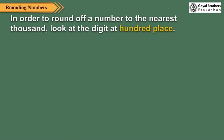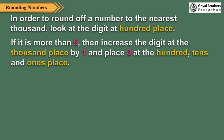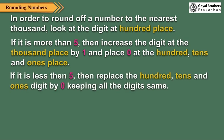In order to round off a number to the nearest thousand, look at the digit at the hundreds place. If it is more than five, then increase the digit at the thousands place by one and place zero at the hundreds, tens and ones place. If it is less than five, then replace the hundreds, tens and ones digit by zero, keeping all the other digits the same.